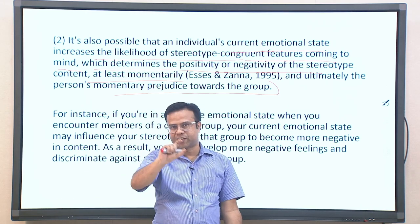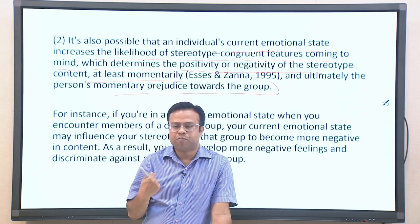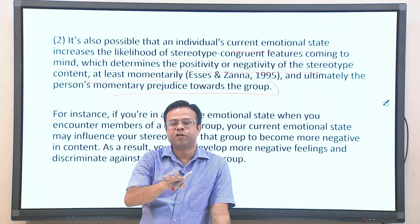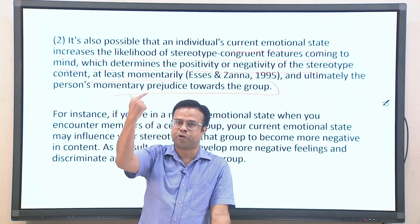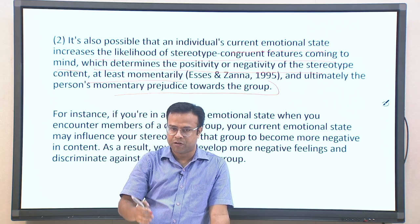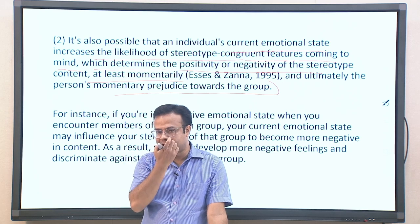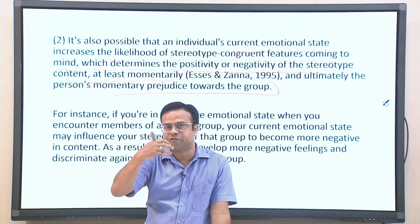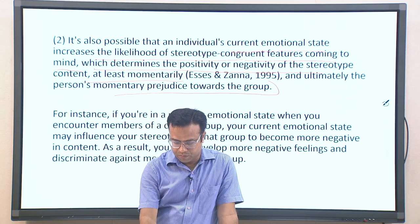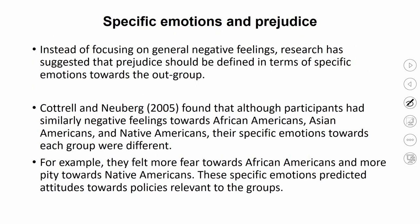For instance, if you are in a negative emotional state when you encounter a member of a certain group, your current emotional state may influence your stereotype of that group. Negative emotions make negative stereotypes come to mind, which then develop more negative feelings towards those people. Once feelings develop, that becomes a prejudice, and you may likely discriminate against those people — which may not be accurate in many contexts. Some research also shows that specific emotions are associated with prejudices, not just general positive or negative feelings.